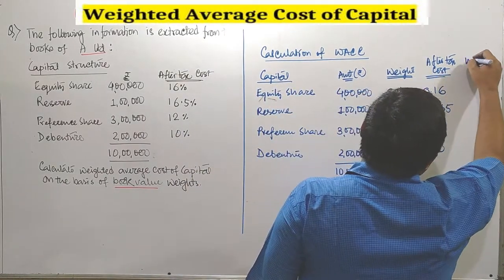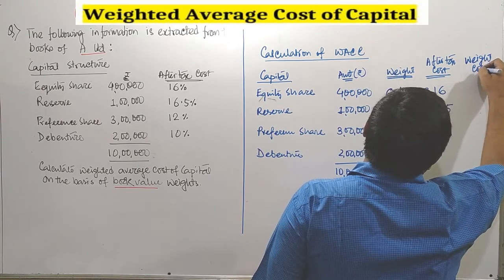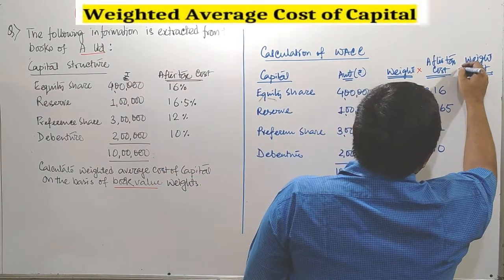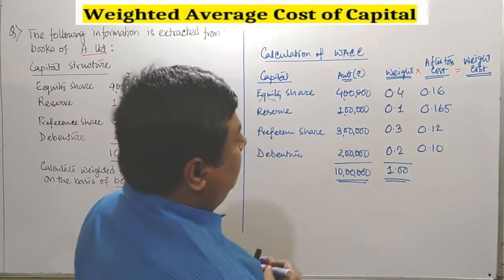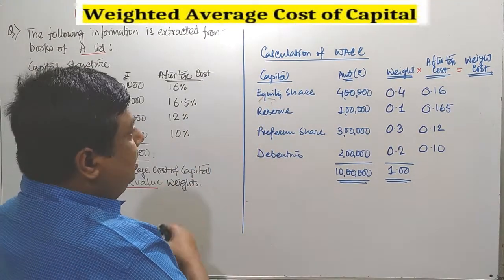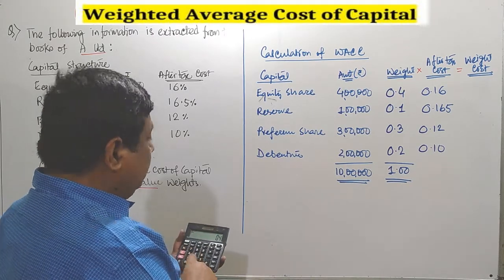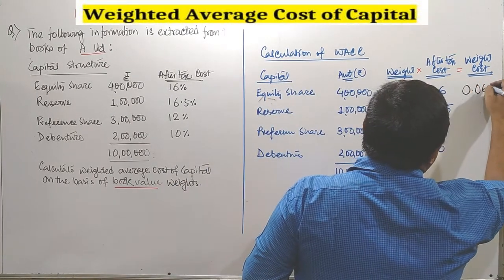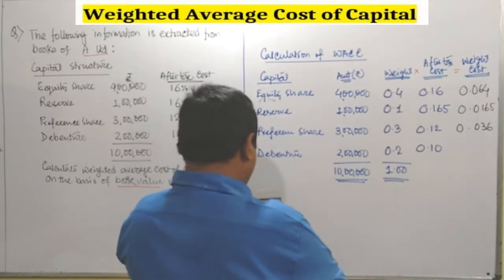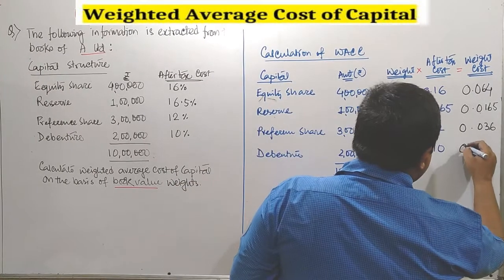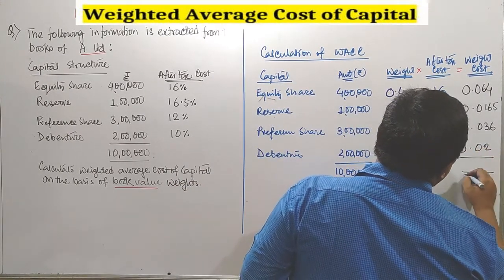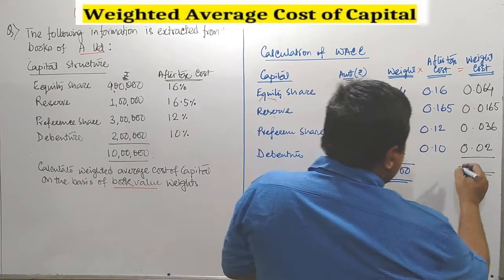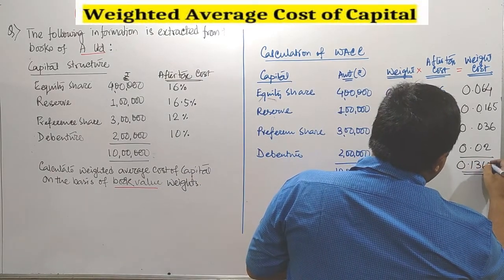Next is the weighted cost column. Once you multiply weight into cost, you get the weighted cost number. Let's multiply each component: 0.4 into 0.16 gives 0.064. Then 0.2 into 0.1 gives 0.05. Making the total, we are getting 0.1365.